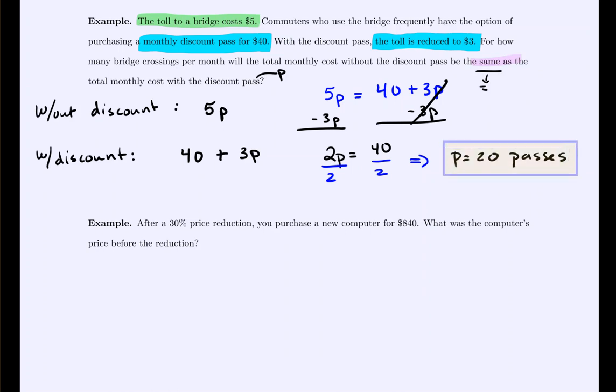And we get P has to equal 20 passes before the discount rate equals the normal rate. So if you were trying to consider, should I buy the discount pass or not? You would have to know that you'd need to make over 20 commutes per month before it starts to save you money. Anytime before the 20 and just paying the $5 per toll would be cheaper.